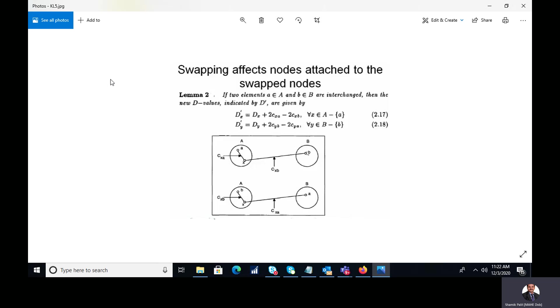Now we start swapping both the values. Then the modified value of D which we are indicating here as D' can be represented in the following way. So if I consider a specific value of D', it is given in the following way: D'x equal to Dx plus 2Cxa minus 2Cxb.